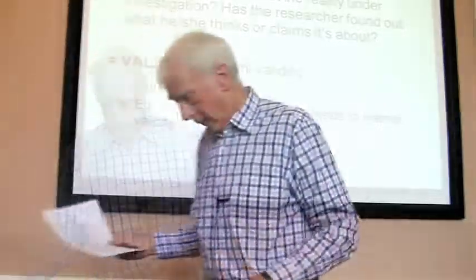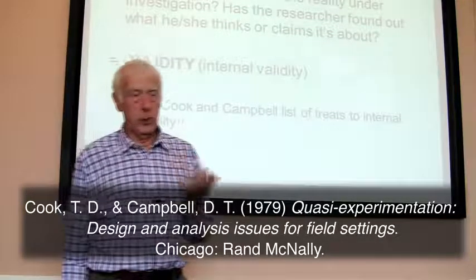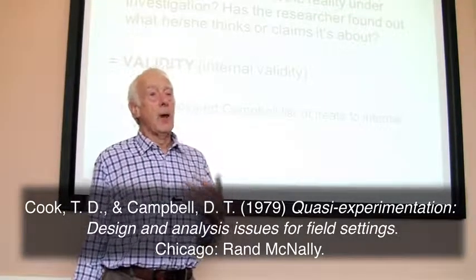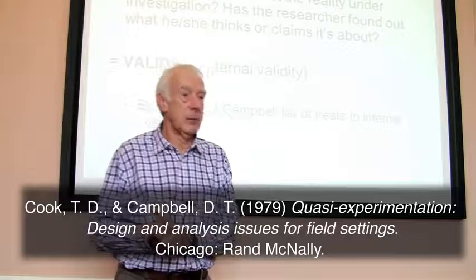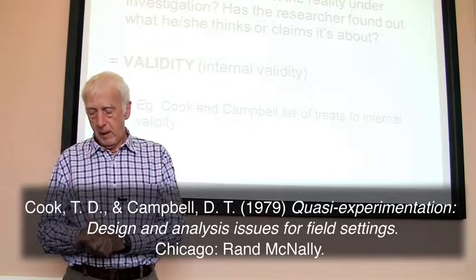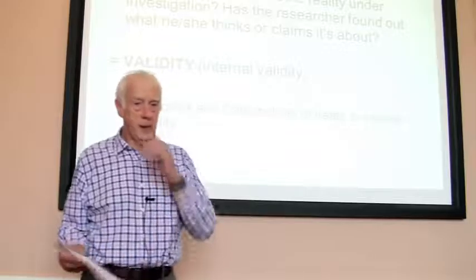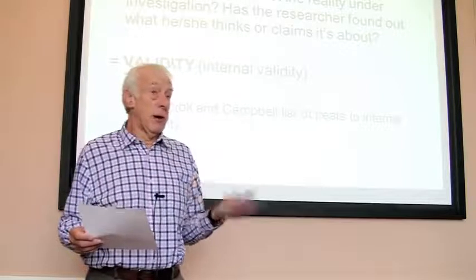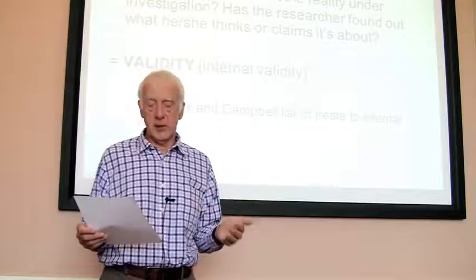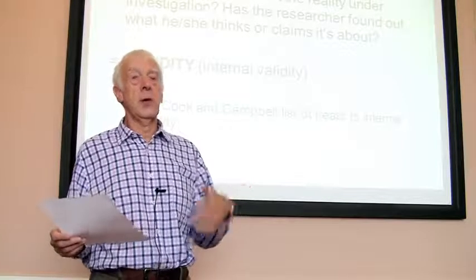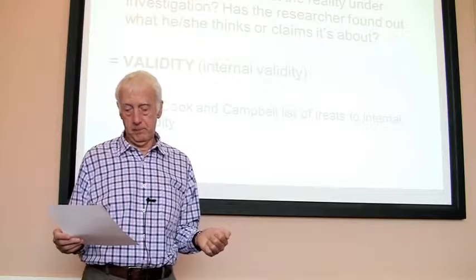There's a handout taken from Cook and Campbell, who have written a lot about experimental and quasi-experimental designs. They give a list of things that can go wrong in an experiment, threatening validity — ways in which you think you've found what's actually happening but you haven't, or something else has caused the situation.